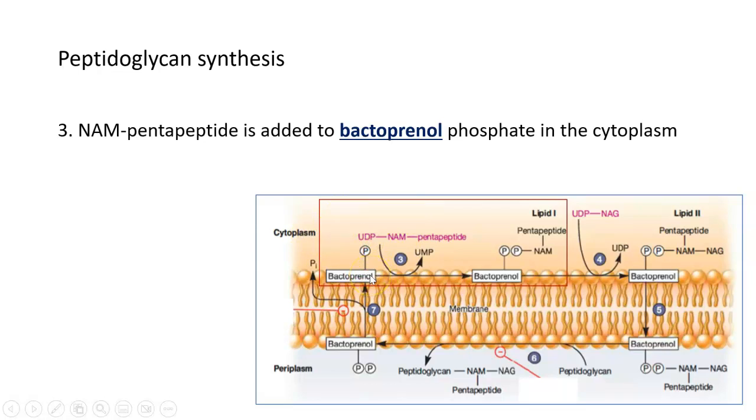Bactoprenol acts like a shuttle molecule that's able to take the growing, the subunits of peptidoglycan from the inside of the bacterial cell to the outside. So this first step is getting bactoprenol, the shuttle, connected to NAM pentapeptide. And in the process, you form this thing called lipid 1. You can see bactoprenol here. You can see the NAM pentapeptide here. And now they're all connected. And this whole complex is lipid 1.